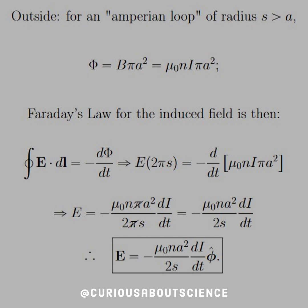Applying Faraday's law again, E on the circumference of the Amperian loop gives 2 pi S, and the negative d by dt of the flux again only applies to the current. Solving for E and dividing by 2 pi S, we see that E equals negative mu-naught n A squared over 2S times dI/dt in the phi-hat direction — so it's A squared over 2S instead of S over 2 as we saw for the inside case. Slightly different, but still a good example of this.